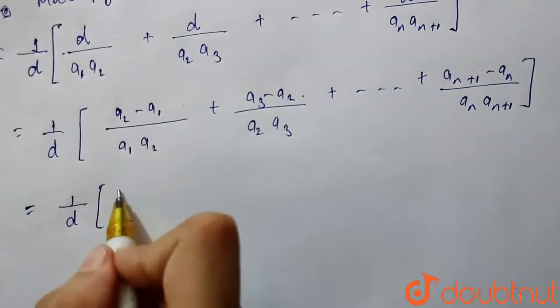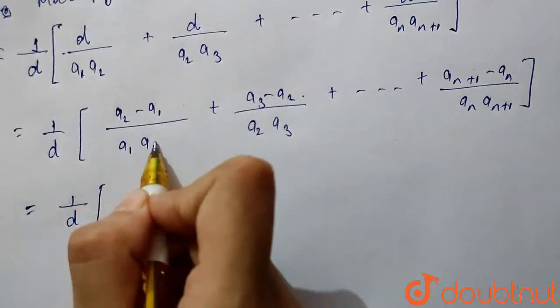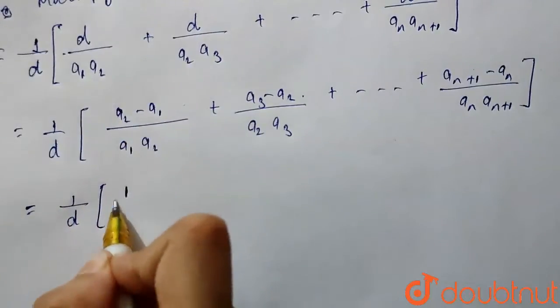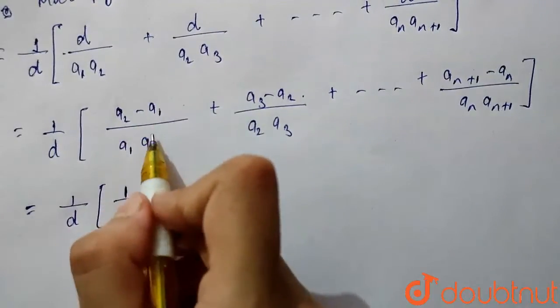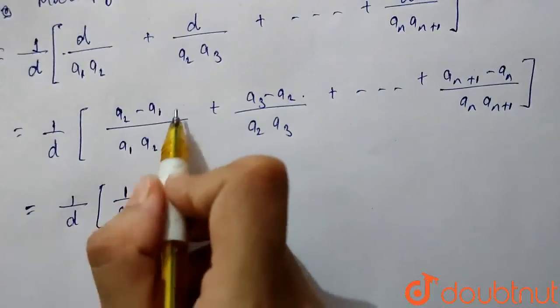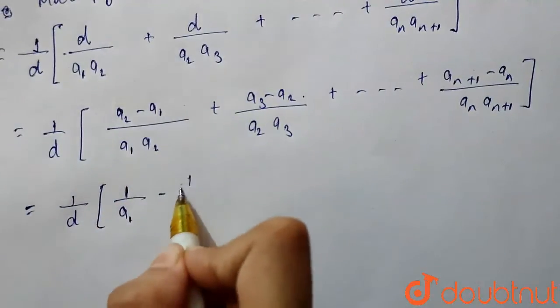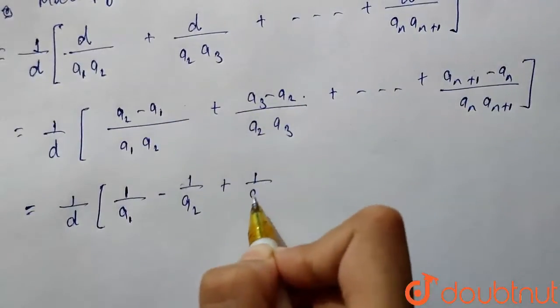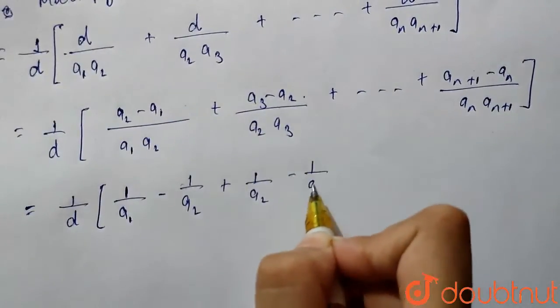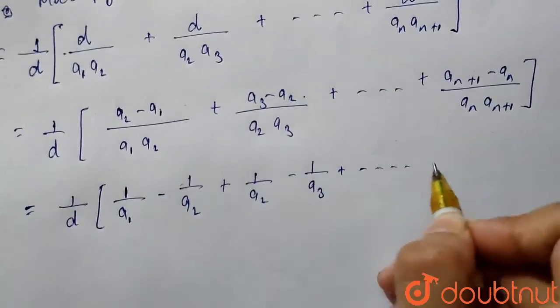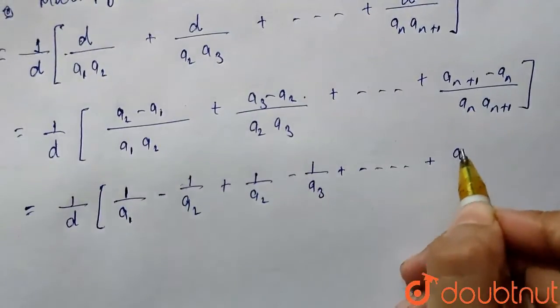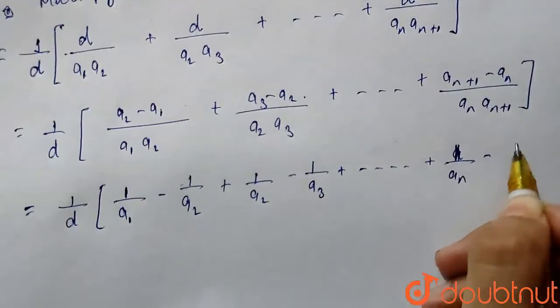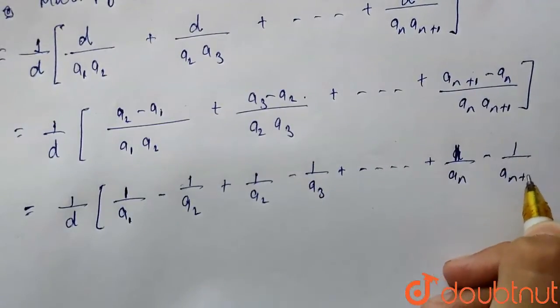Now, separate both, we will get a2 upon a1a2. So a2 will cancel and we will get 1 upon a1. Similarly, a1 upon a1a2, then a1 will cancel and we will get 1 upon a2 and so on. Here also, we will get 1 upon a2 minus 1 upon a3. Here we will get 1 upon an minus 1 upon an plus 1.